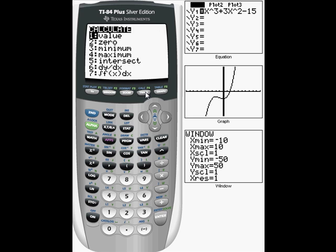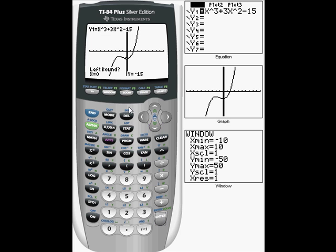So I'm going to do second calc. I'm looking for a maximum. So I'm going to go to number 4, which is max, and hit enter. Now, left bound means I need to move my cursor to the left, anywhere to the left of that maximum point, and I hit enter.